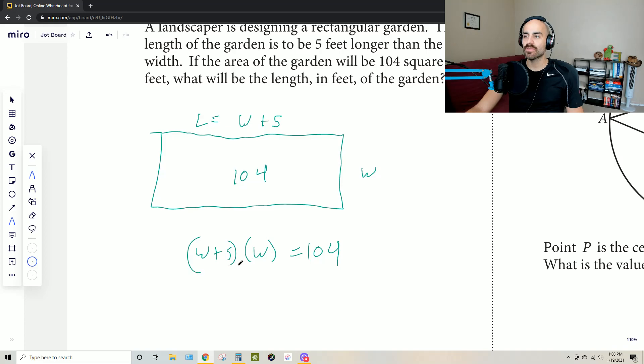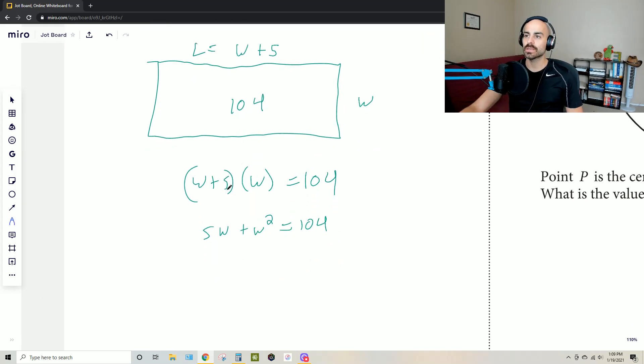And once we have that, we end up with five w plus w squared equals 104. And then from there, we can get 104 to the...